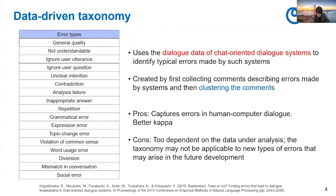This is the second existing taxonomy called the data-driven taxonomy, and it has 17 error types. It uses dialogue data of chat-oriented dialogue systems to identify typical errors made by such systems. It was created by first collecting comments describing errors made by the systems, and then clustering the comments. As for pros, it can capture errors in human-computer dialogue and therefore achieves better kappa. As for cons, it is too dependent on the data and the analysis, and the taxonomy may not be applicable to new types of errors that may arise in future development.